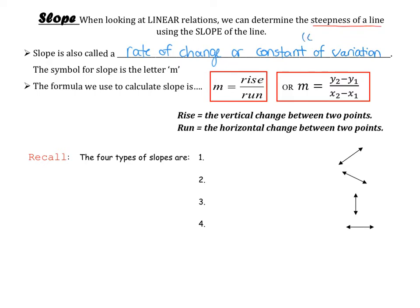COV for short or ROC for rate of change. Constant of variation isn't one that I would typically use, so you won't hear me refer to it as constant of variation, but rate of change is definitely one that you will hear many times.